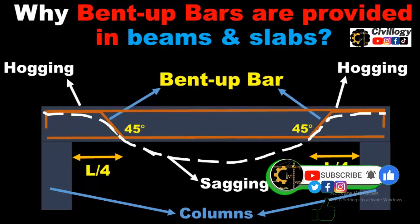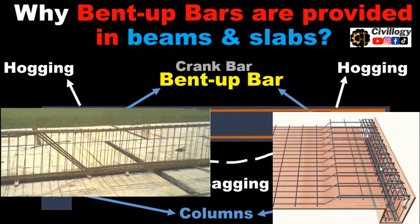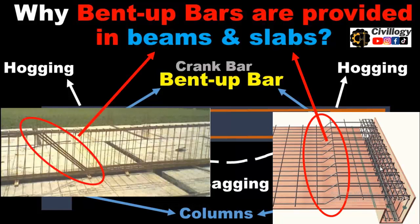Bent up bar is also called as crank bar. Crank bars are generally provided in beams and slabs. As we know that beams and slabs are lateral tension members and both are designed on the same parameters. It is important to know that a slab is designed as a beam having unit width, so the behavior of both members is the same under loading.